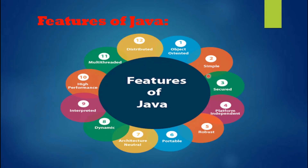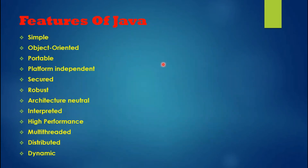Java has many different features and characteristics, including: object-oriented, simple, secure, platform-independent, robust, portable, architecture-neutral, dynamic, interpreted, high performance, multi-threaded, and distributed.